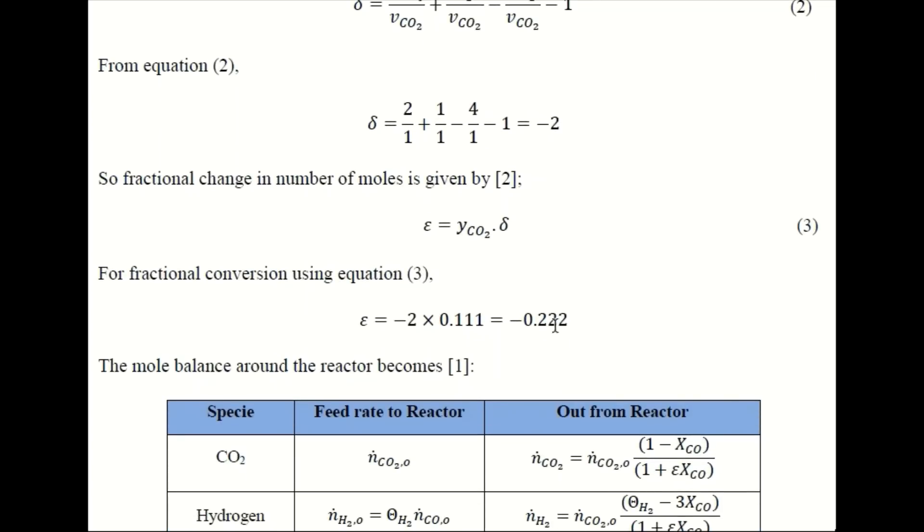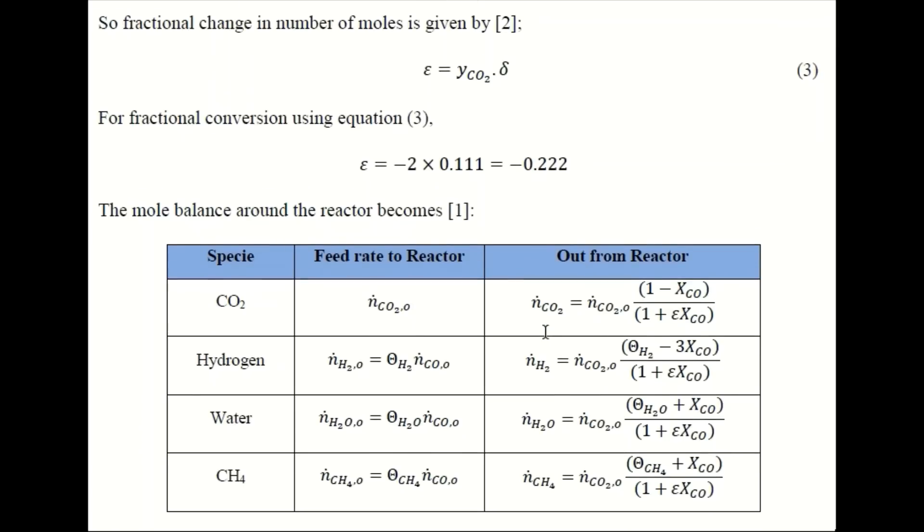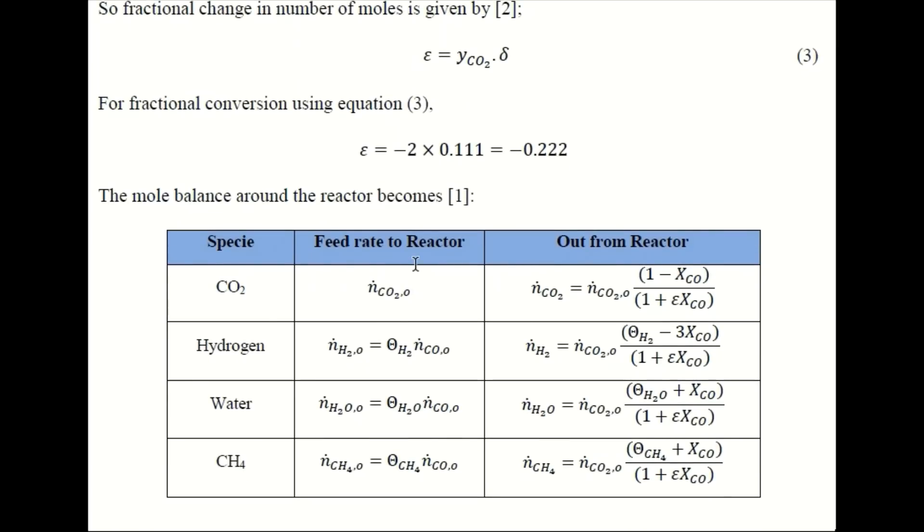So now based on the mole balance of the reactor, we can clearly see that we are giving CO2 as reactant and hydrogen as reactant, and we obtain water and methane as products. So we can write it in terms of theta which I will explain later. So this is basically a term to accommodate the change in volume.